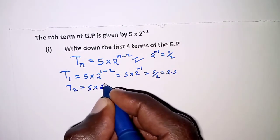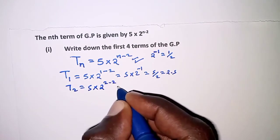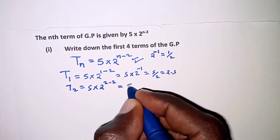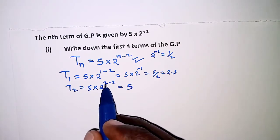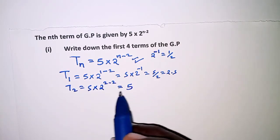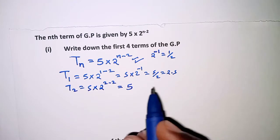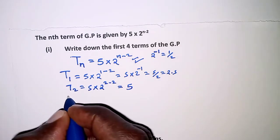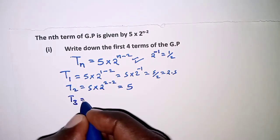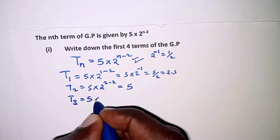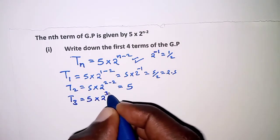5 × 2^(2-2), and that is 5. Remember 2^0 is 1, so it's just like having 5 × 1. And then the next term, the third term, is 5 × 2^(3-2),